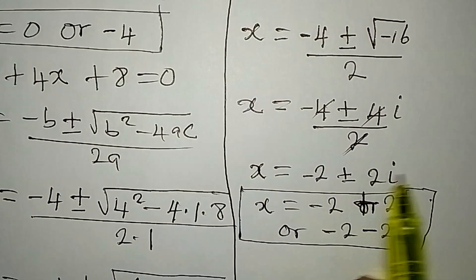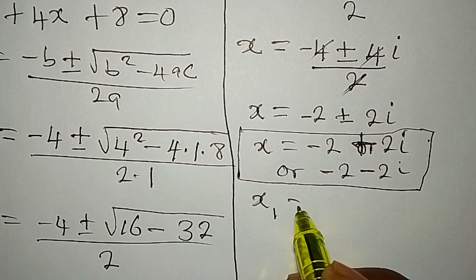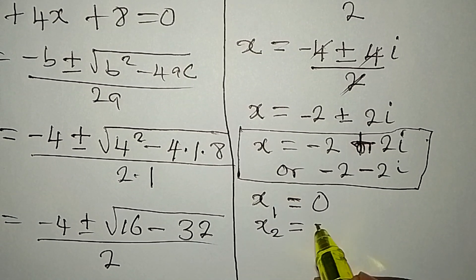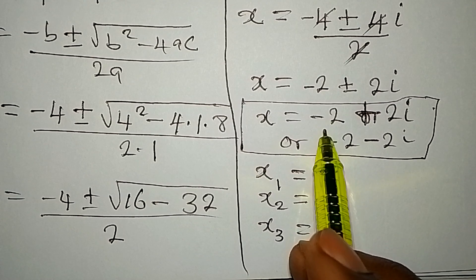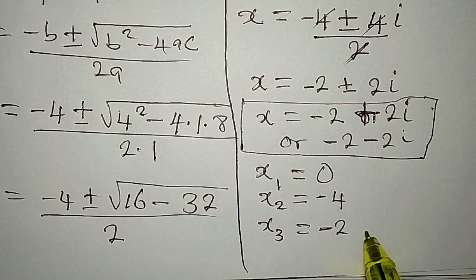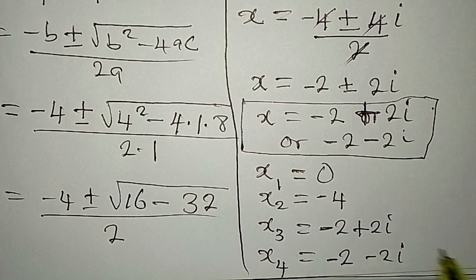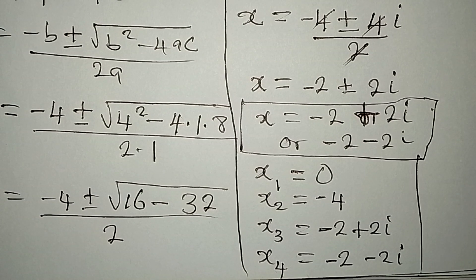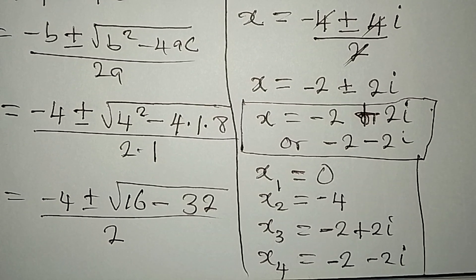Bringing all four solutions together: x₁ equals 0, x₂ equals negative 4, x₃ equals negative 2 plus 2i, and x₄ equals negative 2 minus 2i. Those are the four solutions. Thank you for watching — please subscribe to the channel and share with your friends.